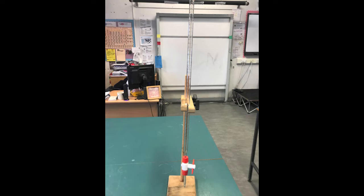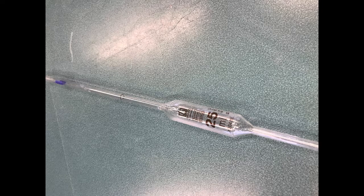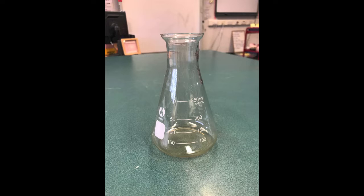The equipment used in titrations are burettes to deliver solutions into a flask during the reaction, a pipette to measure a known volume of solution at the start of the reaction, and a conical flask to carry out the reaction in.